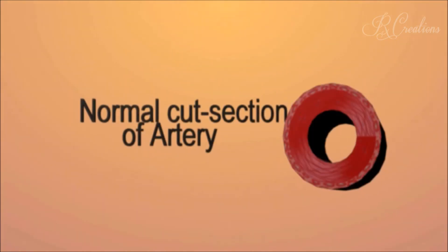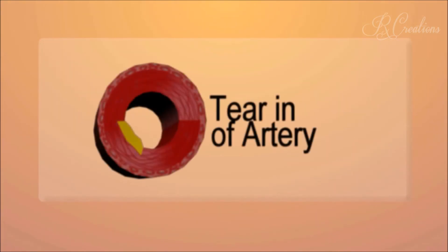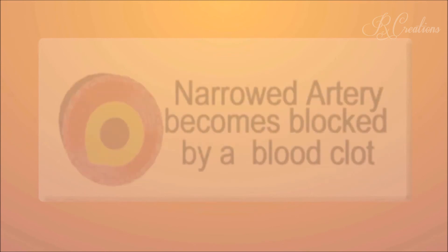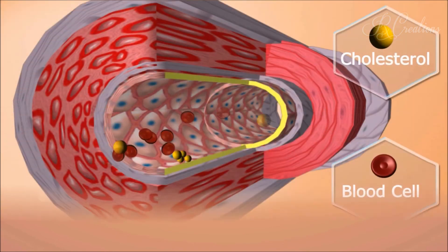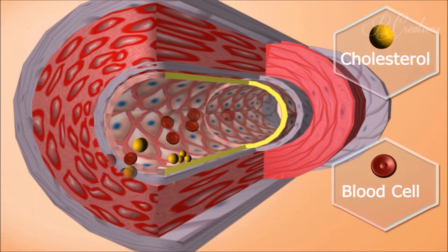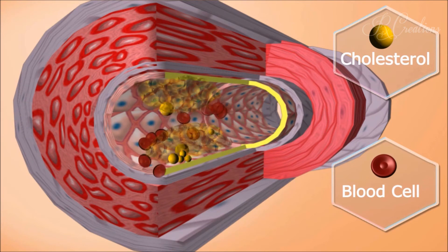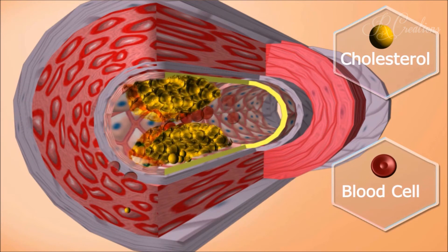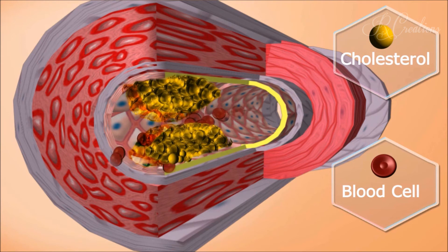The plaque reduces the space inside the artery, and the amount of blood that flows is gradually reduced until it stops flowing, as the pathway is closed by the plaque. The blockage formed in the artery prevents blood from reaching the heart muscle, and without oxygenated blood, the heart muscle will gradually become damaged.